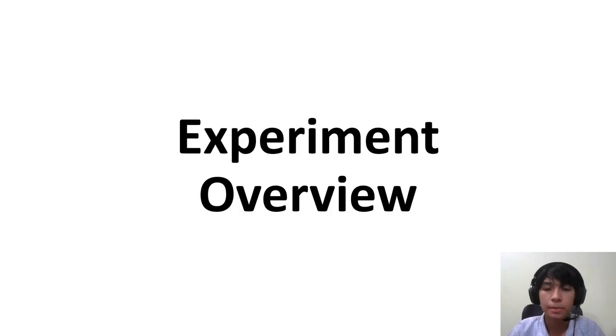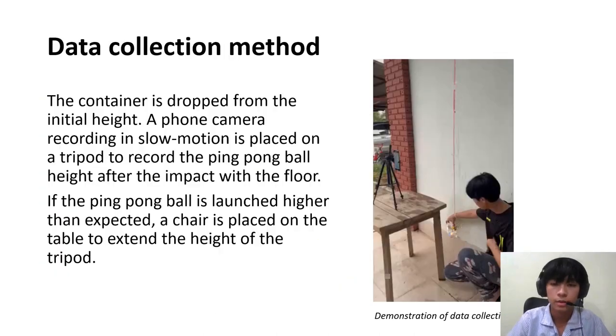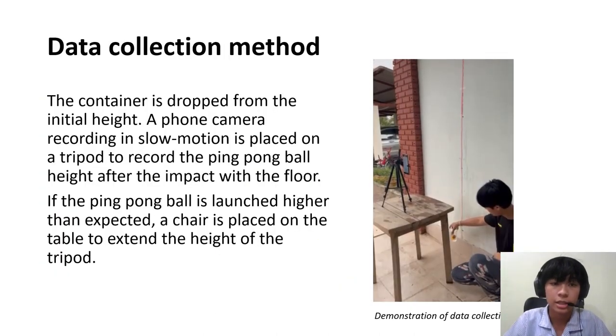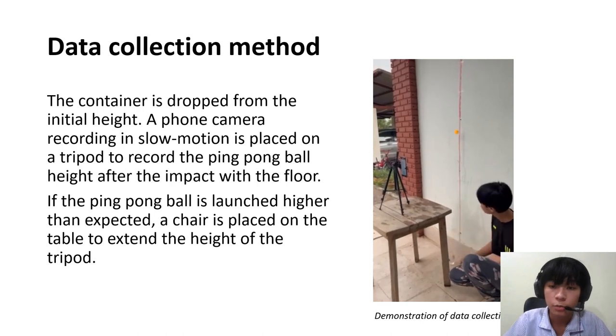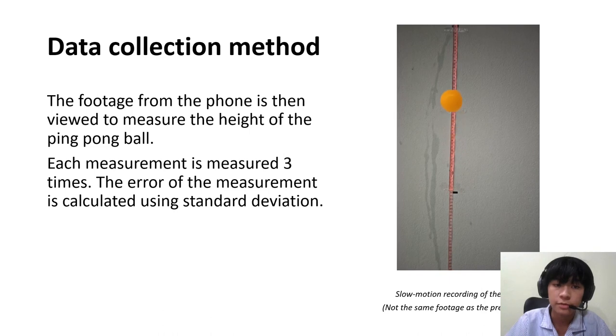Let's have a look at the experiment overview. Here's the experiment setup. This is the data collection method. We have a phone recording in slow motion. We can view the footage from the phone recording in slow motion to measure the height of the ping pong ball. Each measurement is repeated three times and the error is calculated using standard deviation.